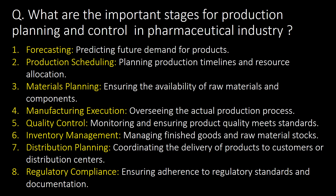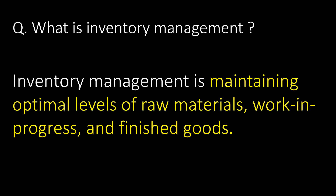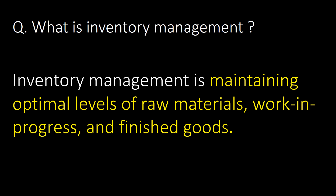What are the important stages for production planning and control in the pharmaceutical industry? Here are the eight important stages: first, forecasting; second, production scheduling; third, materials planning; fourth, manufacturing execution; fifth, quality control; sixth, inventory management; seventh, distribution planning; and eighth, regulatory compliance.